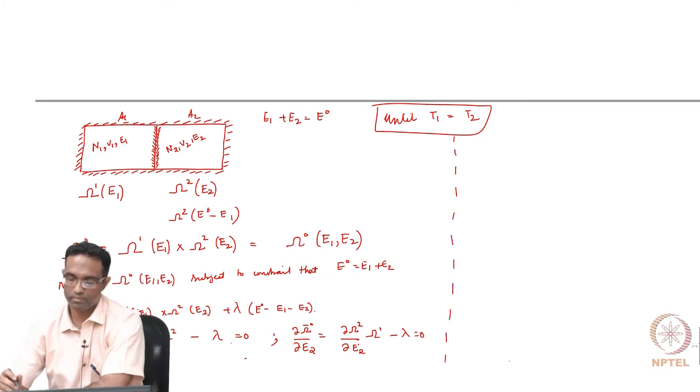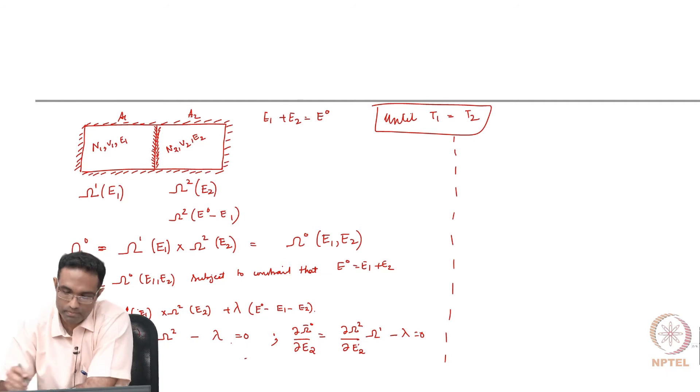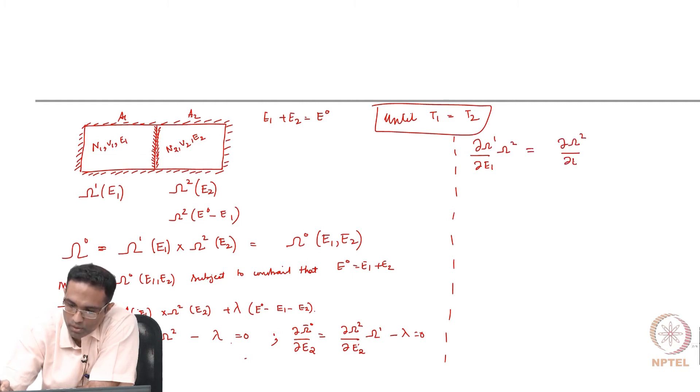These two equations are telling you that dou omega 1 by dou E1 omega 2 is actually equal to dou omega 2 by dou E1 times omega 1.